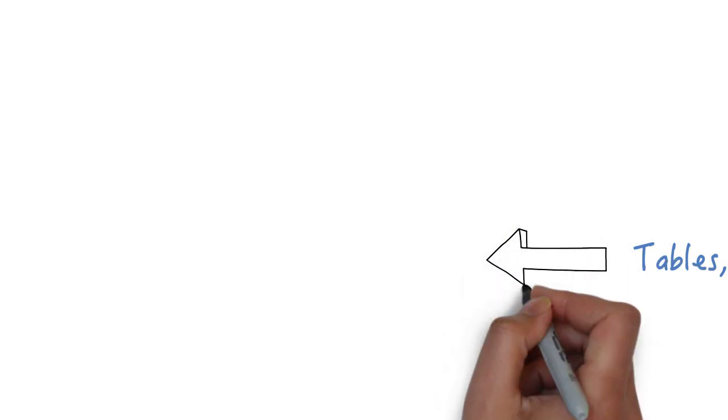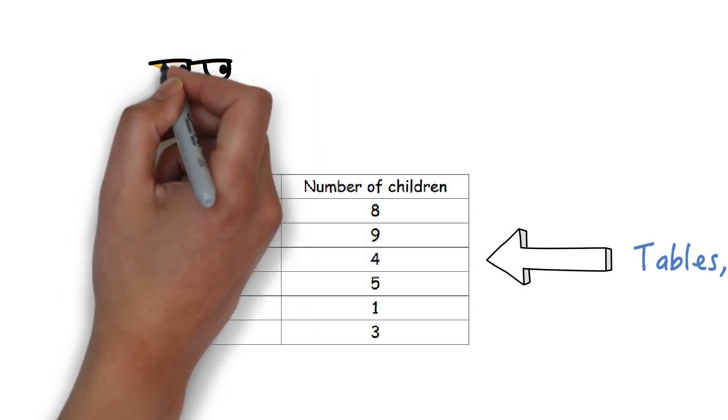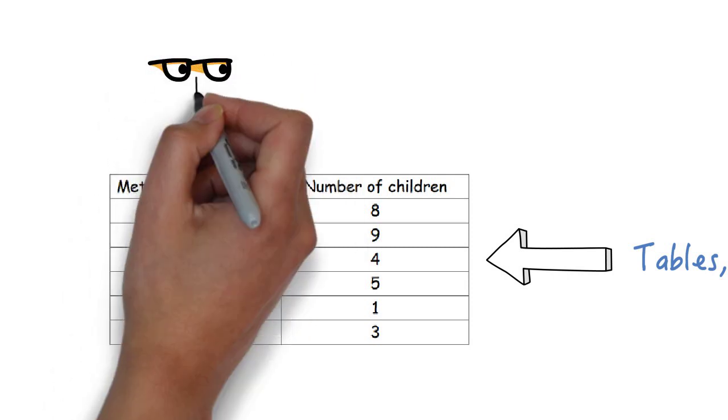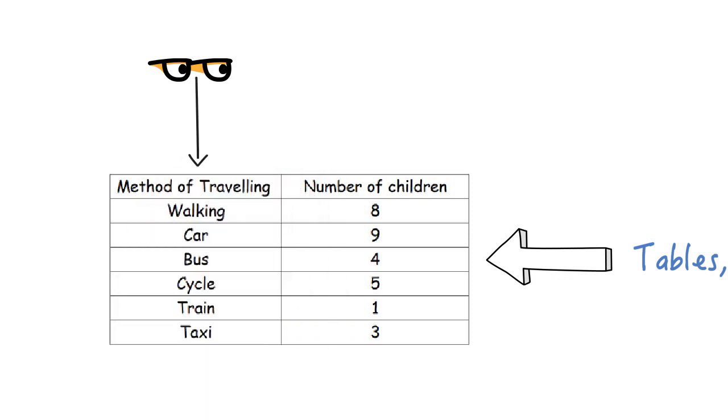This table is showing how different children get to school. You can see that there is a column showing the way children travel and a column showing the amount of children that travel in that way.